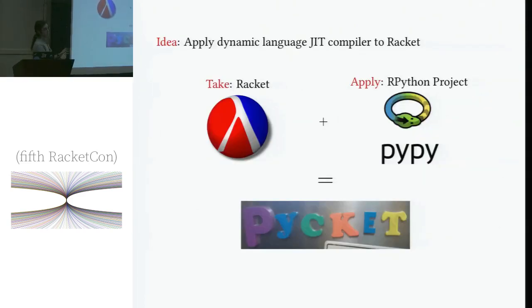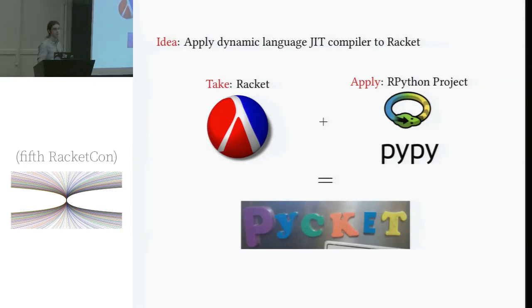So at a high level, the idea is we want to apply modern dynamic language JIT compilation techniques as opposed to what racket currently does, which is basically ahead of time optimizations plus some lazy code generation. And to do this, we make use of some existing work that comes from the RPython project. And this is a project that came out of the development of PyPy. It's a language and framework for implementing efficient dynamic language interpreters, most notable for its inclusion of a fast JIT compiler that you can take advantage of simply by writing an interpreter for your language.